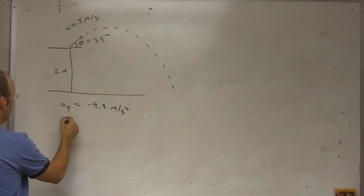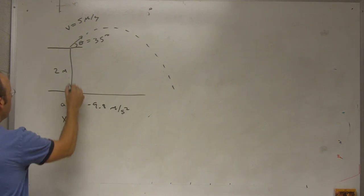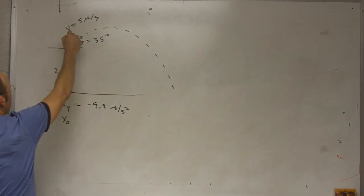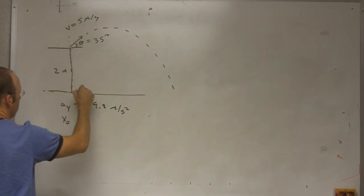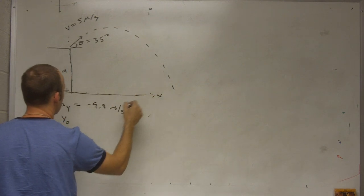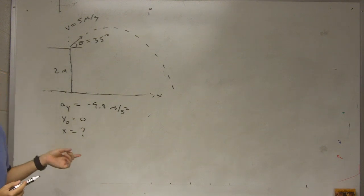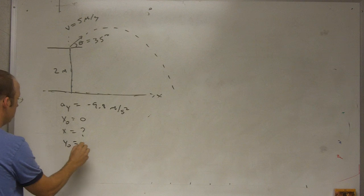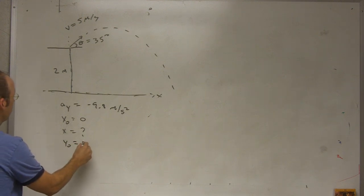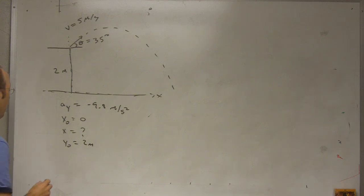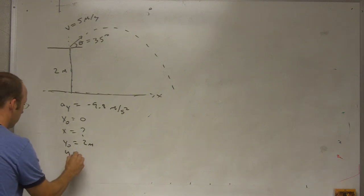So I also need the x0. I'm going to call this the origin. So x0 equals zero, x final equals, we don't know, we're trying to find that. y0 equals 2 meters, and then y final equals zero.